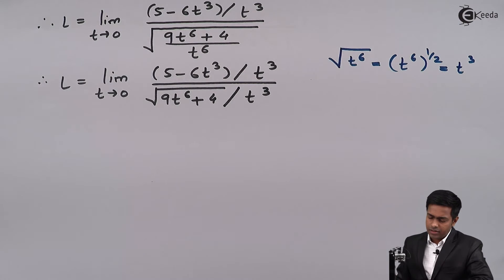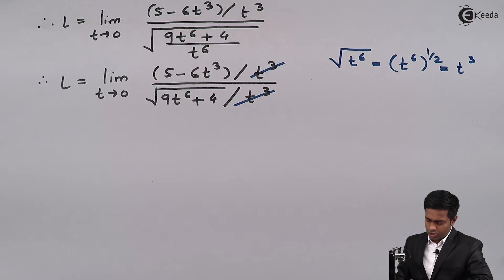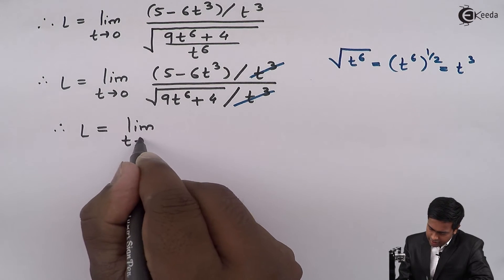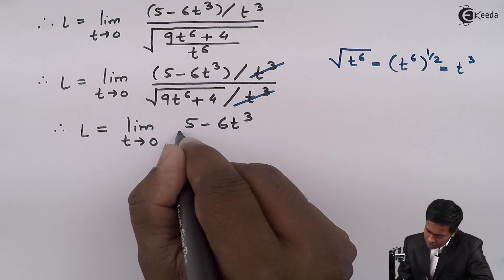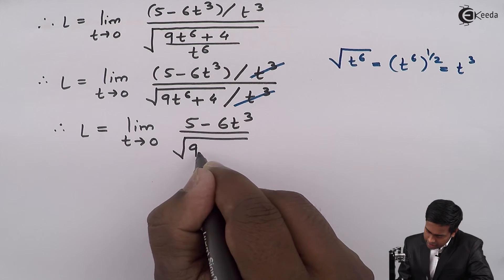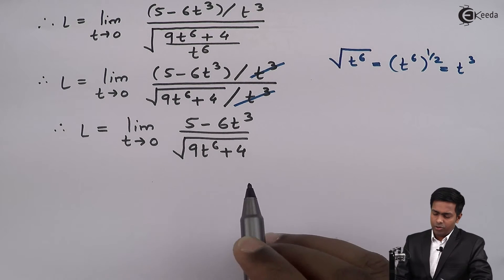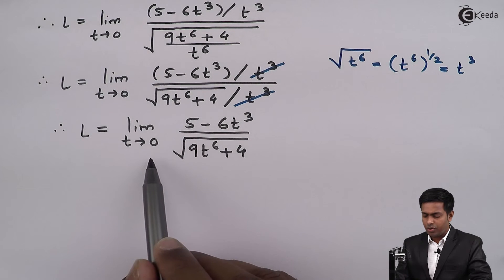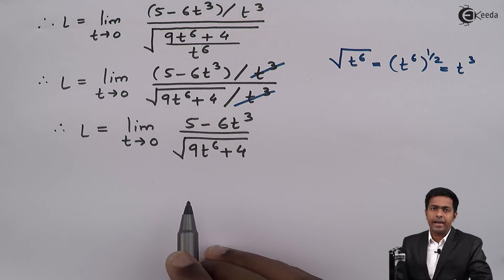After this we cancel t³ from the numerator as well as from the denominator. So we get L as limit t tends to 0 of (5 - 6t³) divided by √(9t⁶ + 4). Now here we have an algebraic function, and whenever we have an algebraic function in a limit we apply the direct method.